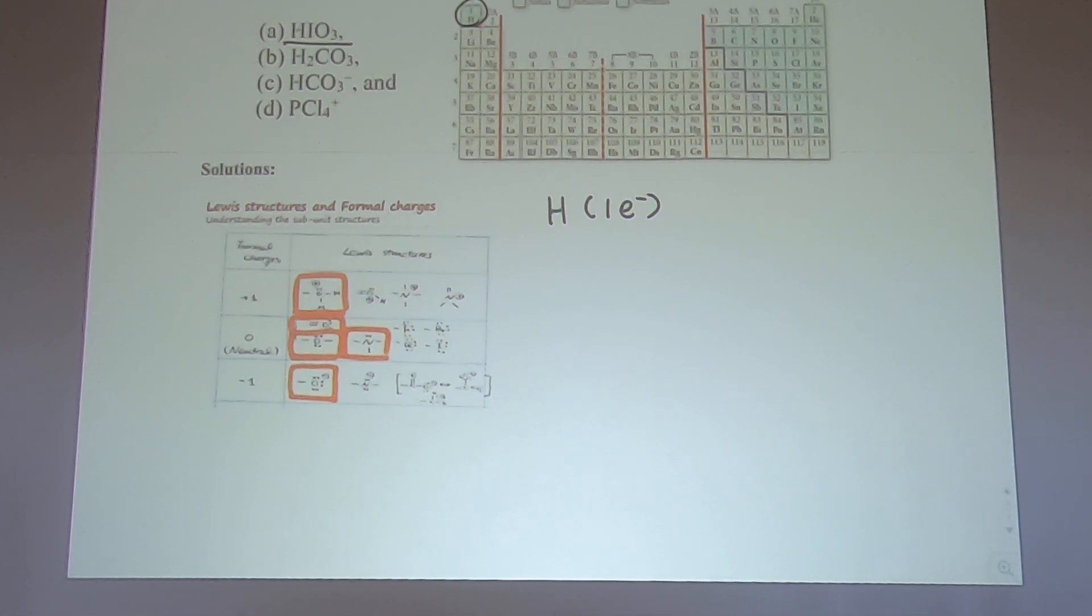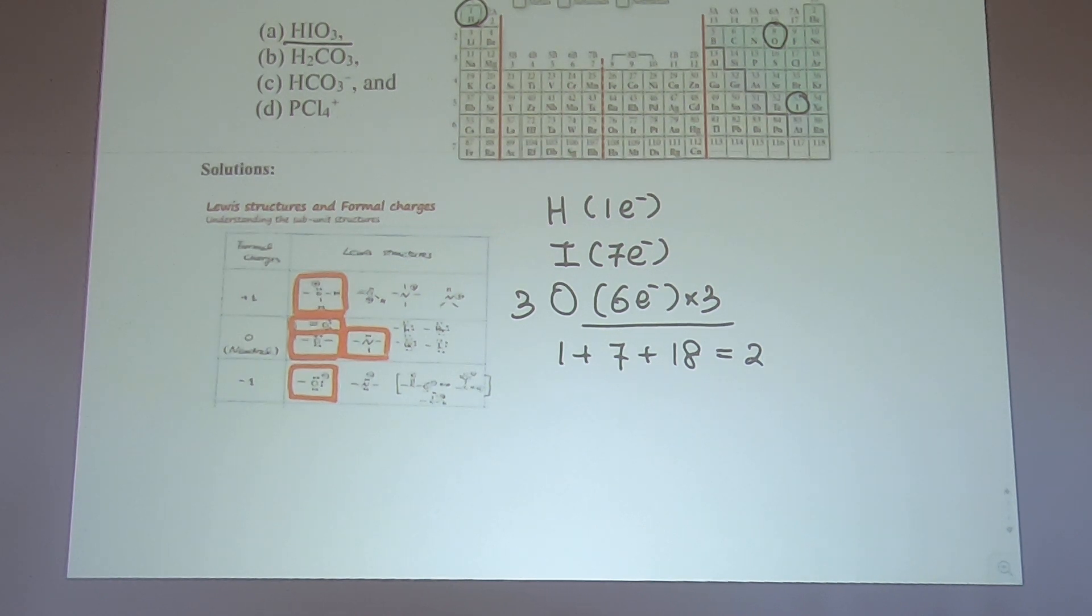What about the iodine? Iodine is here. So to me iodine is seven electrons. Oxygen is right here, six electrons. And you have three oxygens, right? So I'm just going to put these atoms and take out all the valence electrons. I'm just going to count the total number of valence electrons. So there will be one plus seven plus 18. There will be 26 valence electrons. So far so good.